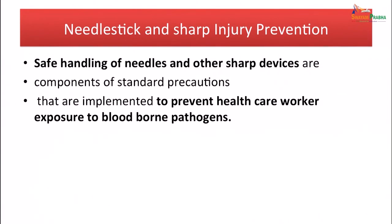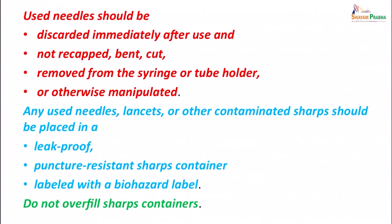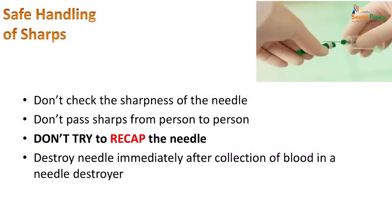As far as needle stick and sharp injury prevention is concerned, safe handling is important. Standard precautions are implemented to prevent exposure to blood. Needle stick injury is seen to transmit HIV in 0.1 to 0.3%, HBV in 10 to 30%, and HCV in 3 to 10%. Used needles should immediately be discarded and should never be recapped, bent or cut, removed from the syringe or tube holder, or otherwise manipulated. Any used needles, lancets or contaminated sharps should be placed in a leak-proof puncture-resistant sharps container labeled with a biohazard label, and the container should not be overfilled. Do not check the sharpness of the needle, do not pass a needle from one person to another, do not try to recap the needle, and destroy the needle immediately after collection in a needle destroyer.